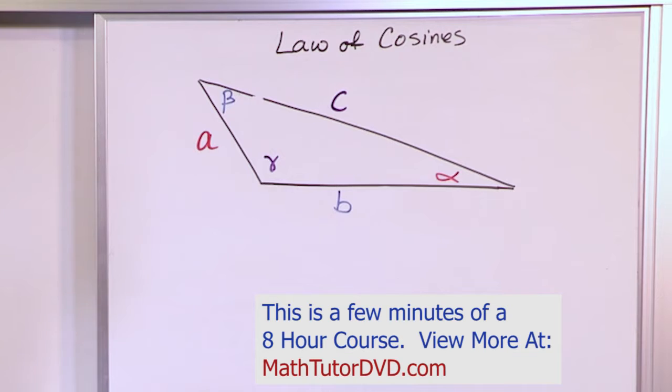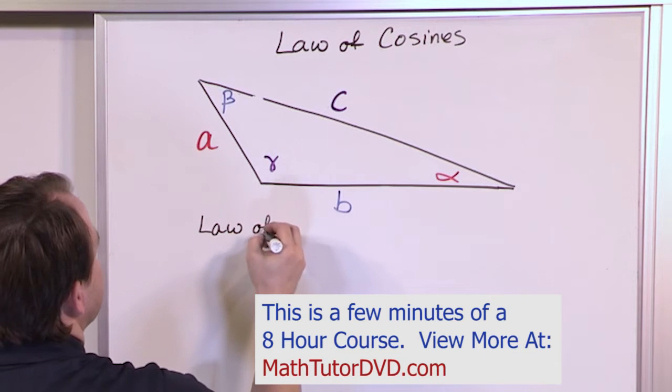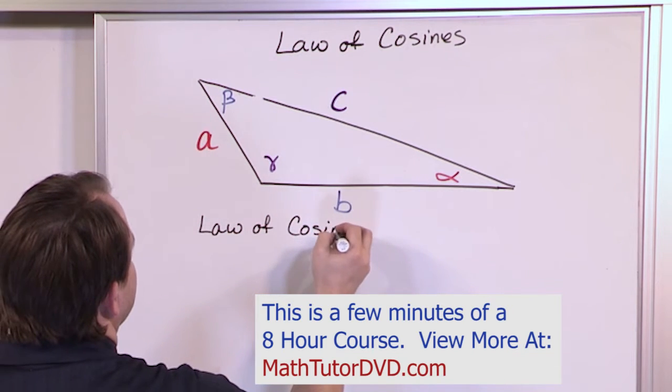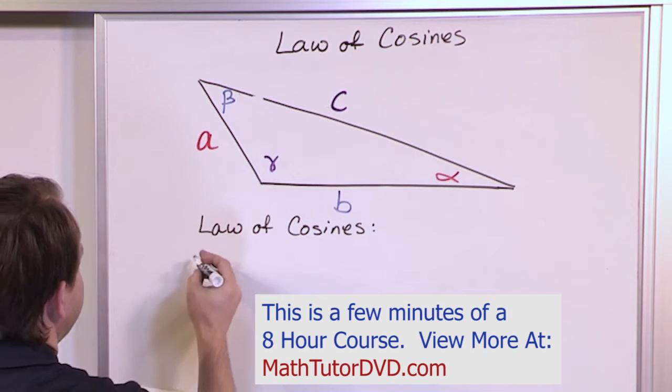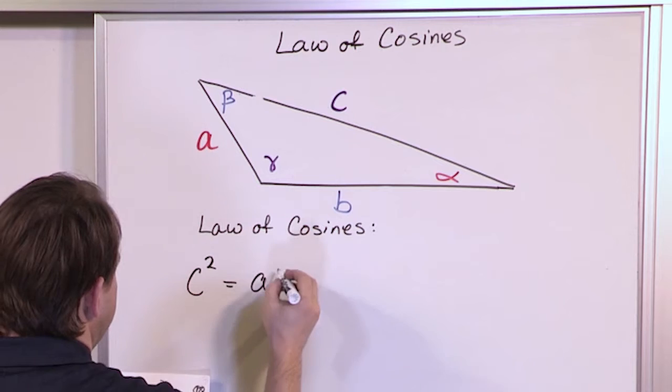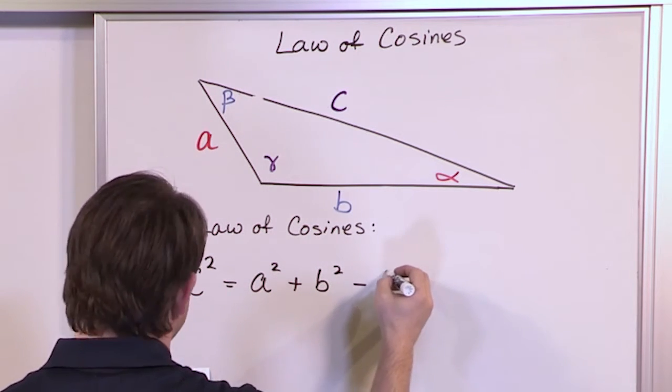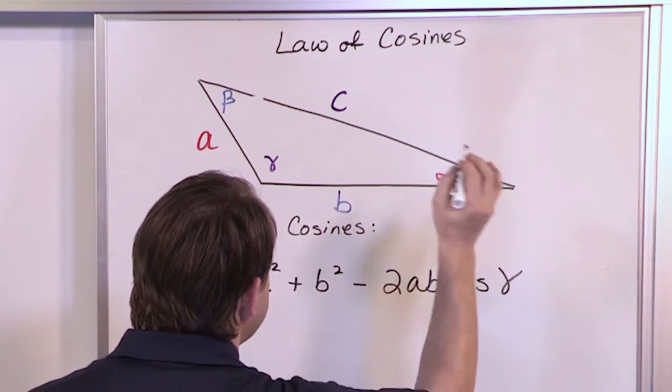Now I think it's easier if I just write down the law of cosines and then talk about it. So law of cosines. There's actually three different versions of it, but you'll see once I show the first one it's pretty easy to understand them all. C squared is equal to A squared plus B squared minus 2AB cosine gamma.